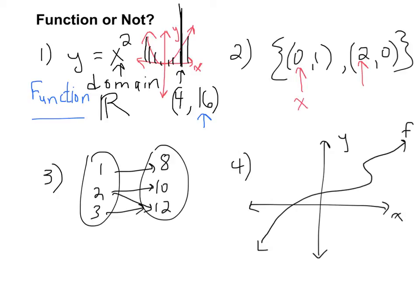It's paired with 1. Remember, this is your x value, your input, and this is your y value. And then here is 2. It's paired with 0.